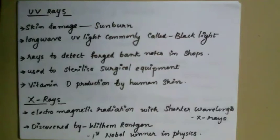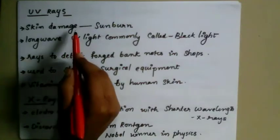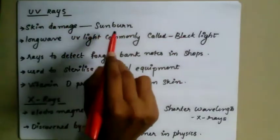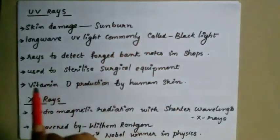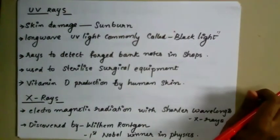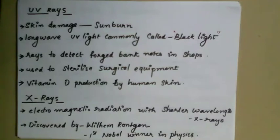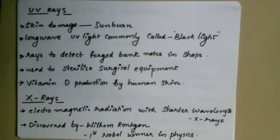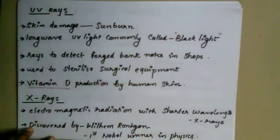Ultraviolet rays can cause skin damage and sunburn. Long-wave UV light is commonly called black light, used in shops to detect forged banknotes. UV rays are also used to sterilize surgical equipment in hospitals, and they help with vitamin D production by human skin.